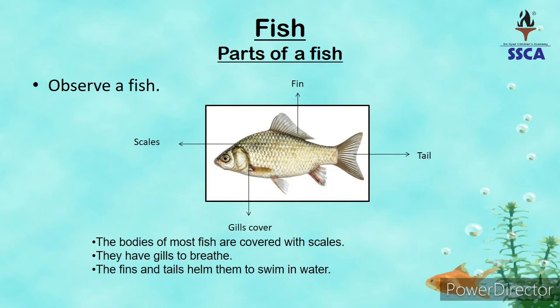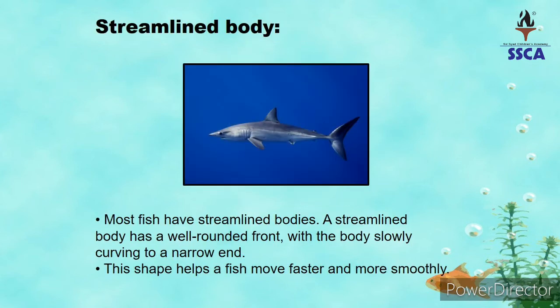The fins and tails help them to swim in water. Fins aur tails inko help karte hain taake ye water mein swim karein. Most fish have streamlined bodies. A streamlined body has a well-rounded front with the body slowly tapering to a narrow end. Zyaadatar fish ki body streamlined hoti hai — front well-rounded hoti hai, center se broad aur curve shape mein hoti hai, lekin end point pe aakar fish ki body narrow aur patli ho jaati hai. Streamlined body fishes ko water mein easily, smoothly, aur fastly move karne mein help karti hai.